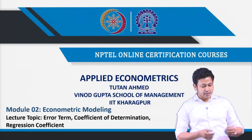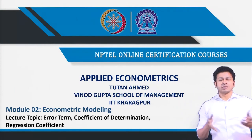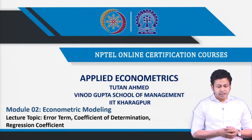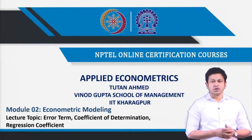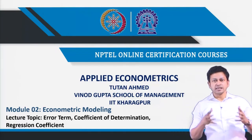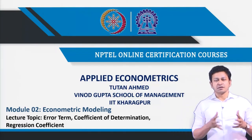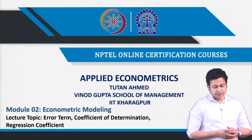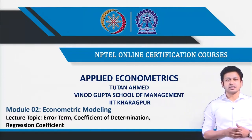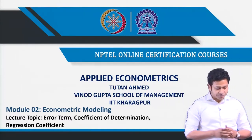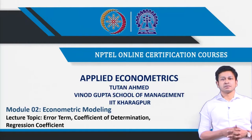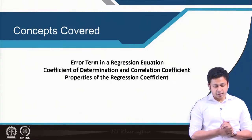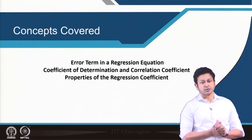The dealing part will come later, but mostly we will talk about where it is coming from. The second topic is coefficient of determination — we are going to see how it is actually related with the correlation coefficient, prove the relationship mathematically, and then talk about the properties of regression coefficient. So let us start with error term in regression equation.